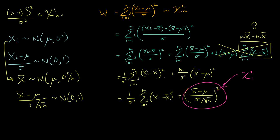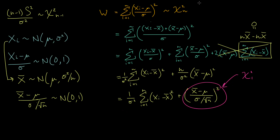In the other half of our minds, we're remembering that this whole expression W up here is distributed as a chi-square distribution with n degrees of freedom. So what happens if we take an independent chi-square distribution with one degree of freedom and subtract it away from an independent chi-square distribution with n degrees of freedom? Because this is the sum of n independent normal random variables, and this is a squared normal random variable, when we subtract, what's left is going to be distributed as a chi-square distribution with n minus 1 degrees of freedom.